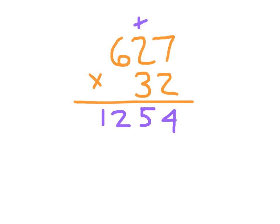Now we have to work with that 3 which is worth 30. Remember to place that 0, and then you can work step by step — in the 1s place, the 10s place, and then the 100s place.